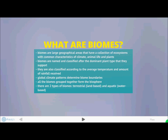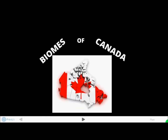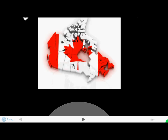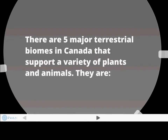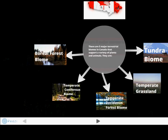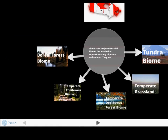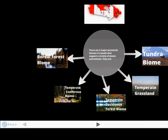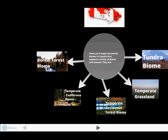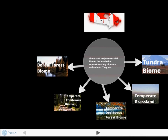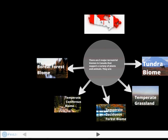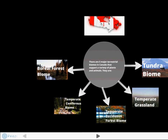Let's explore the biomes of Canada. There are five terrestrial biomes in Canada. These include the boreal forest biome, the temperate coniferous biome, the temperate deciduous forest biome, the temperate grassland biome, and the tundra biome. Let's explore all of these in detail now.